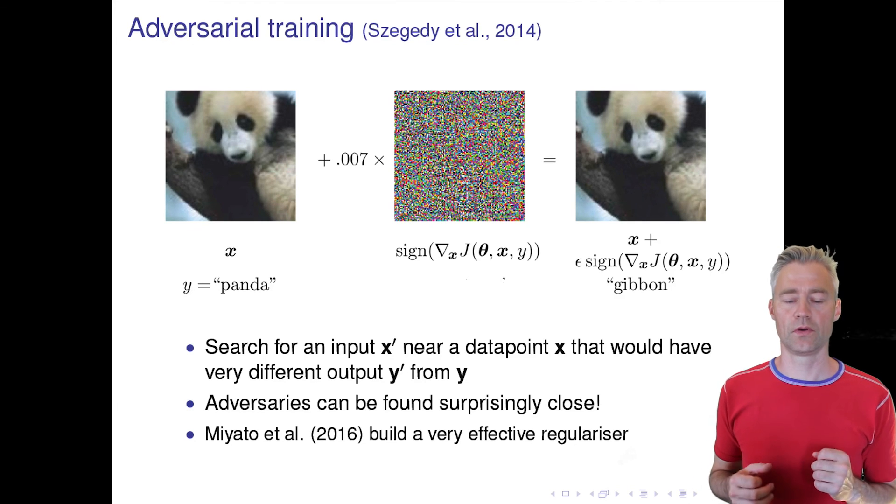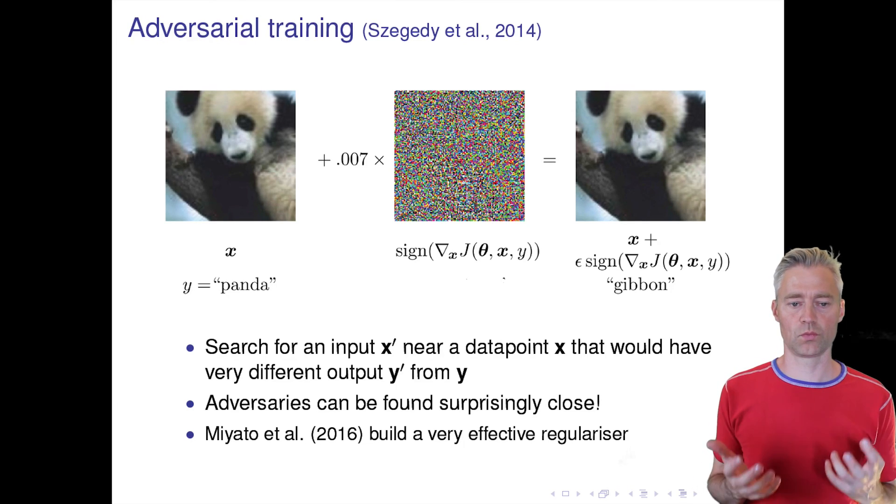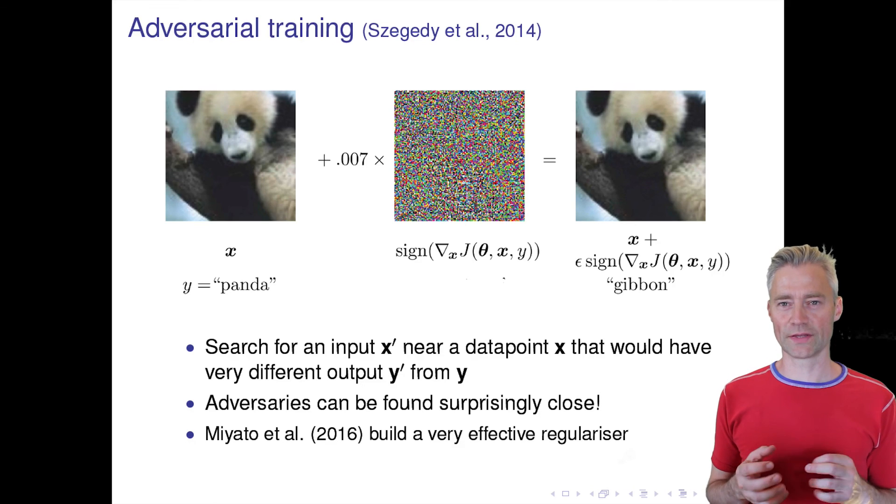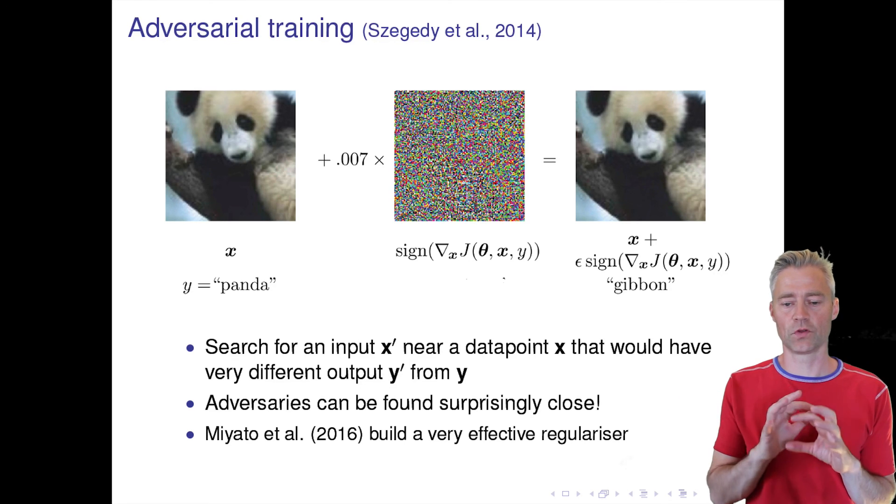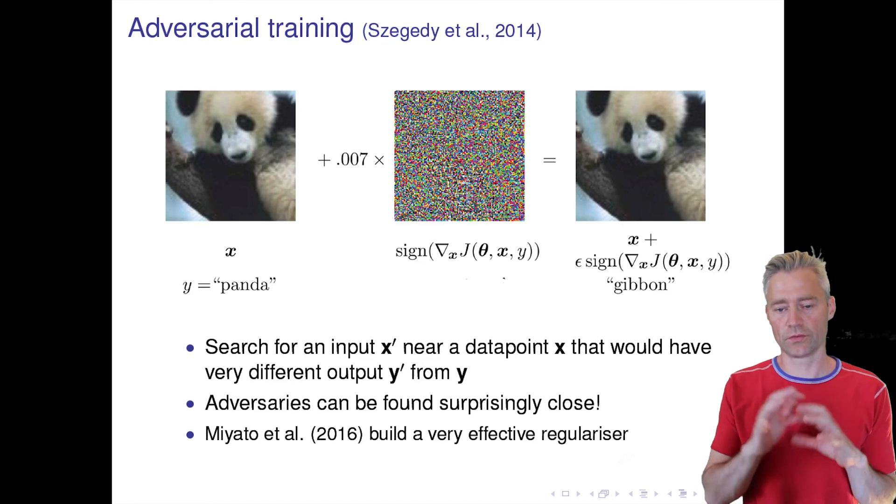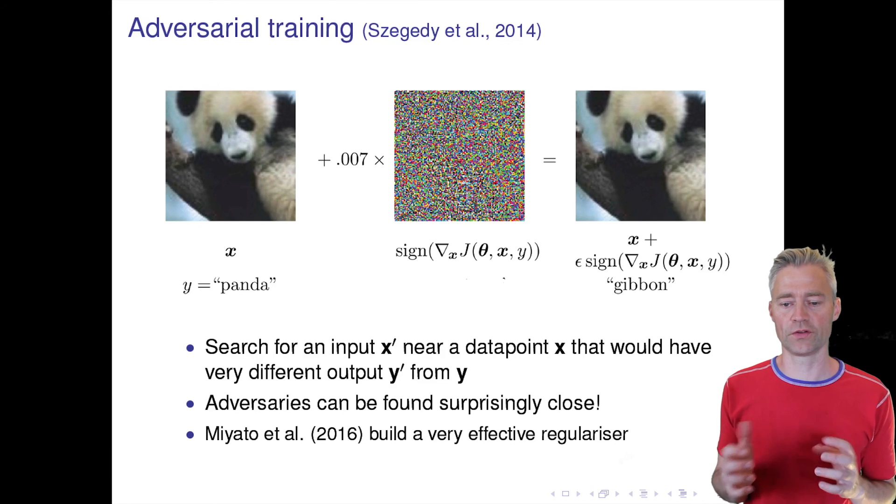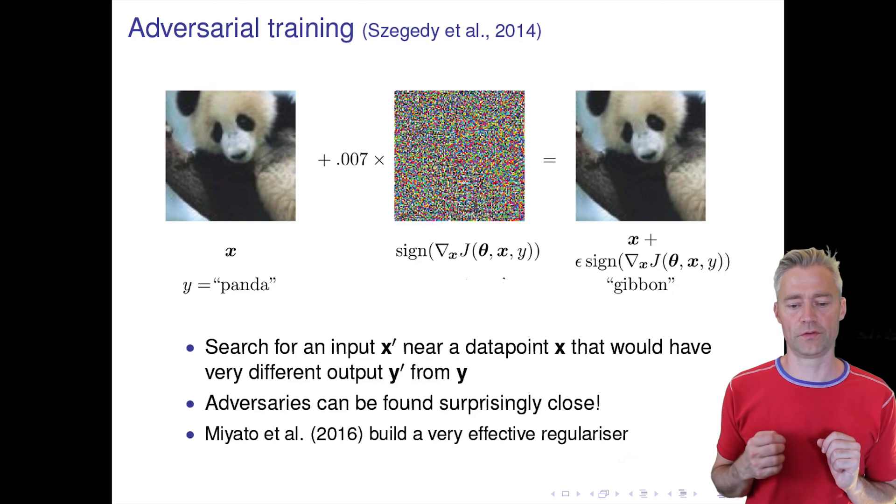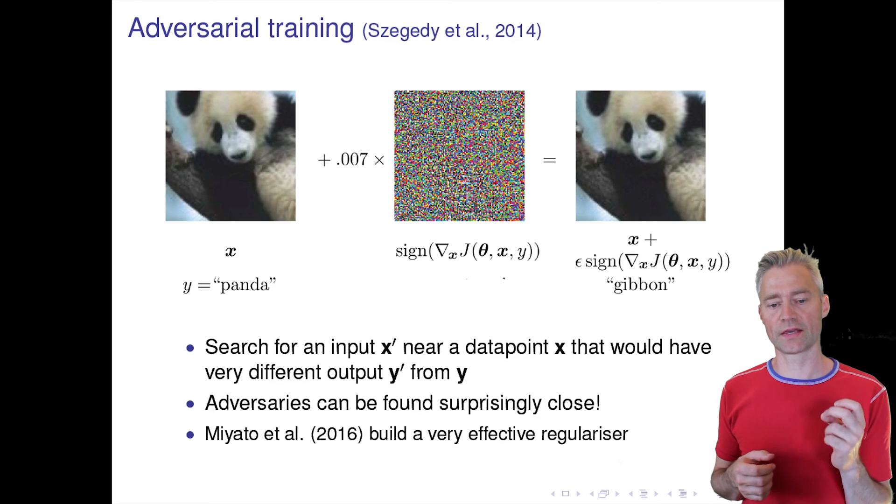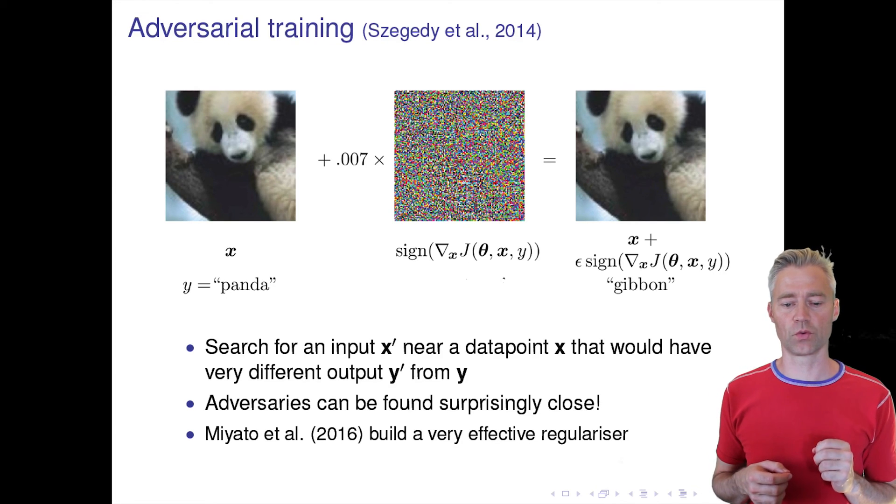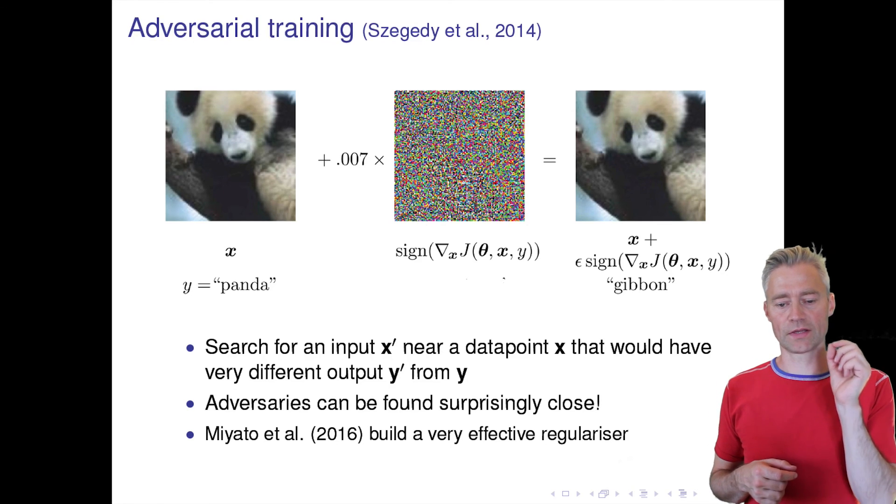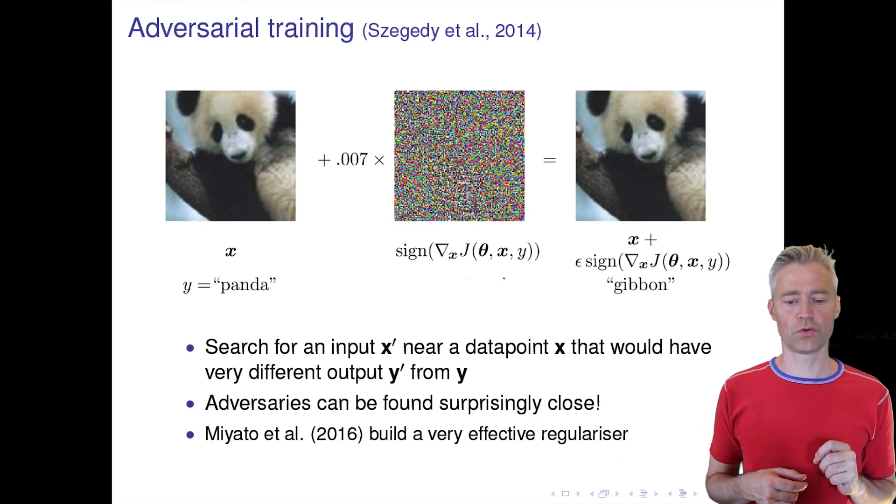This is very strange and shows that the classification manifold or the manifolds, the image manifold that we have learned, is not robust to changes in specific directions. Here we have added an adversarial direction to the image. What we have done here is we have taken x, our panda input, and then we have looked at the cost function for this, and then we have changed the image in the direction where the cost function increases the most.